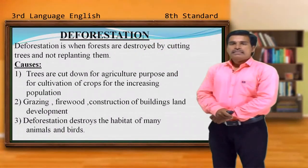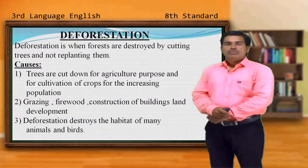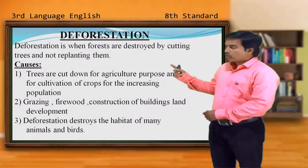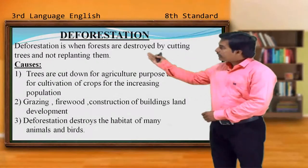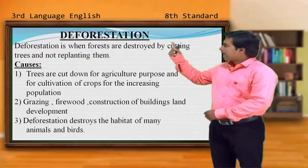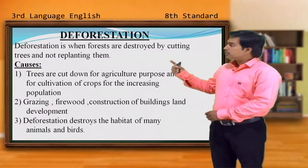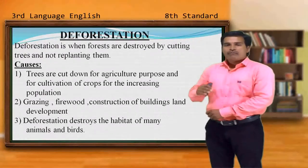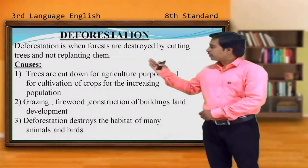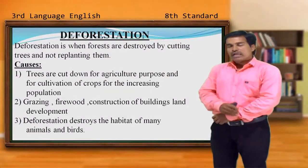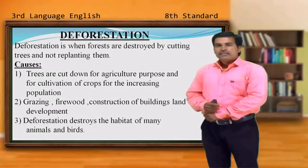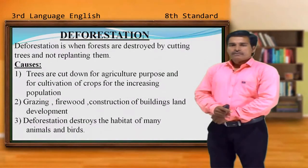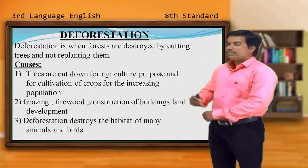What are the causes of deforestation? Trees are cut down for agricultural purposes and for the cultivation of crops because of the increasing population. Deforestation is also happening because of grazing, firewood, and the construction of buildings. Nowadays many agricultural lands have been converted to non-agricultural land especially for construction. Above all, observe the last point — because of deforestation, it is destroying the habitation of many animals and birds who have lost their place.